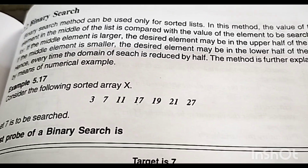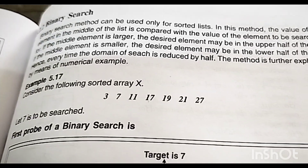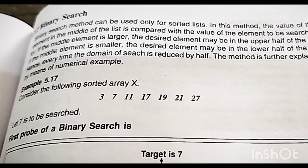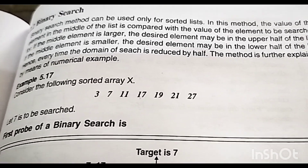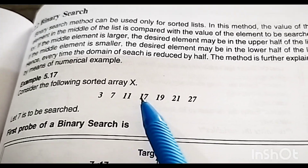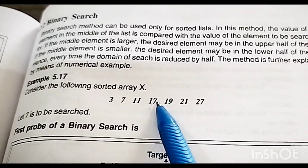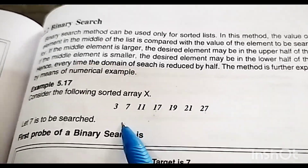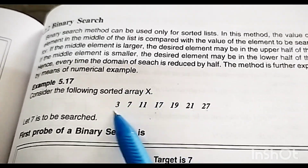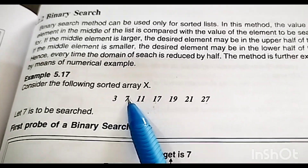The first condition for binary search is that our list must be sorted — arranged in ascending order. We check the middle-most element. If it equals our target, we are done. If our element is smaller than the middle-most element, we search the left half. We then divide that half again and check the new middle-most element.